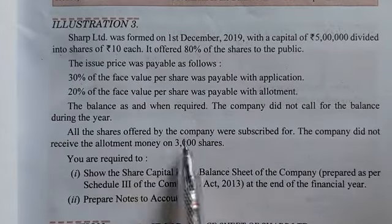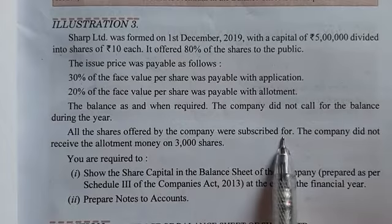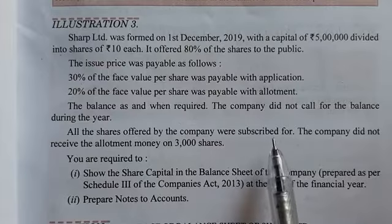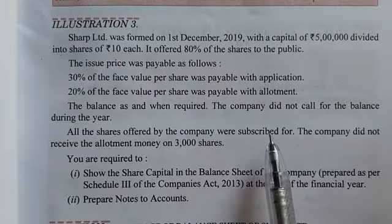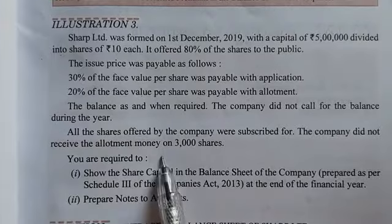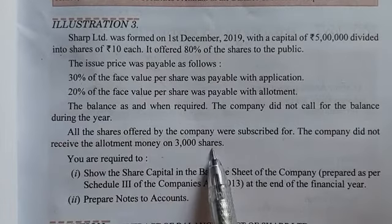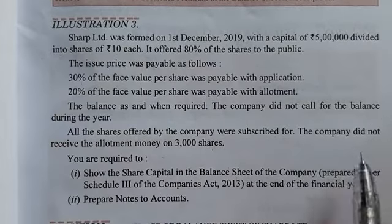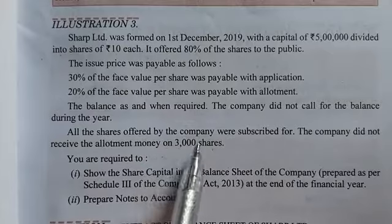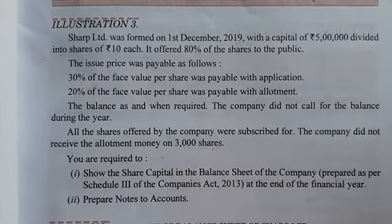All the shares offered by the company were subscribed for. However, the company did not receive allotment money on 3,000 shares — so allotment money on 3,000 shares remains unpaid.